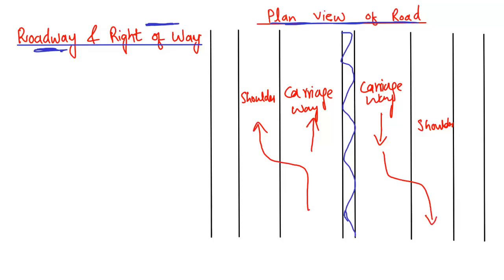Next to the shoulder, we have another element called the margin. The margin is used for drainage of water and is always provided with some slope so that water can flow into the margin and then into the under-structure for drainage. The main purpose of the margin is to provide drainage for rainwater or other water on the road.